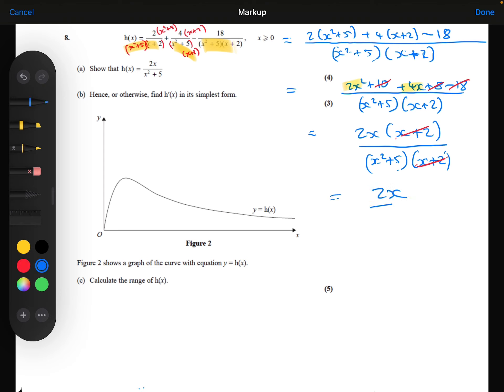And now I notice that the x plus 2s cancel out. So I get as my answer, which is what I needed to show, the 2x over x squared plus 5. So that's part A done.